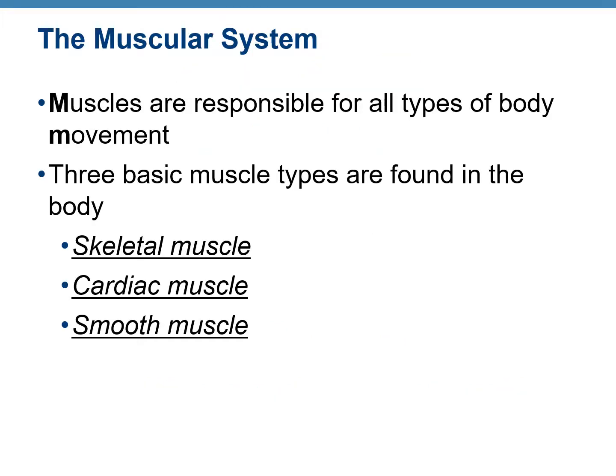The main function of muscles in the human body is to provide movement. There are three types of muscles: skeletal muscle, smooth muscle, and cardiac muscle.